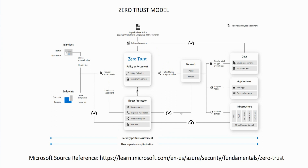The main thing to get across is that the zero trust model is all about verifying everything — verifying explicitly who and what is authenticating. The other principle is to use the least privilege access strategy: you only give the least privileges that someone or something needs to do their job. When it comes to administration, you always use the strategy of Just In Time administration and Just Enough Access — JIT and JEA. And the zero trust model is always under the influence of always assuming there's a breach, which is why it's so important that we verify explicitly.